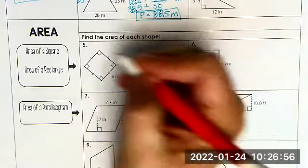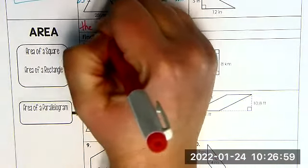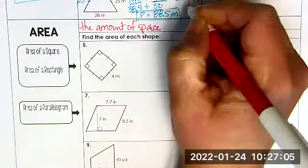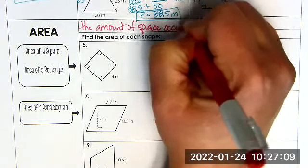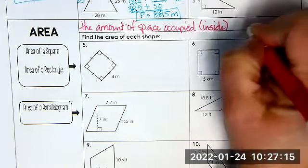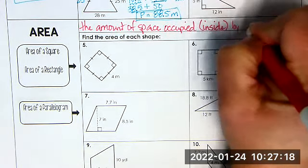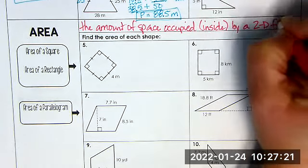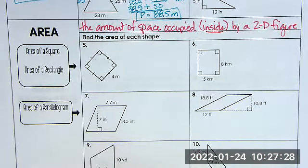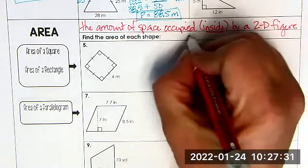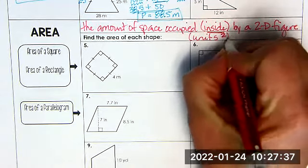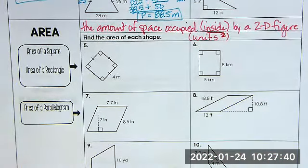Let's talk about area. Area is the amount of space occupied, or inside by a 2D two-dimensional figure. Most of the time when you think about area, you think of inside. For this, you want to remember that it is units squared. And the reason for that is because we do a lot of multiplication.